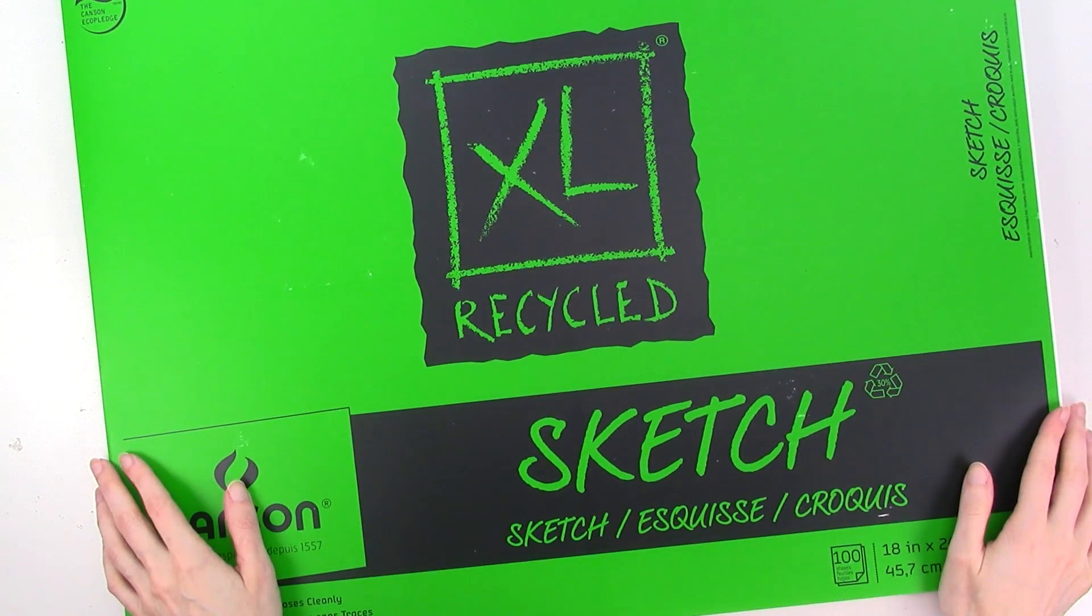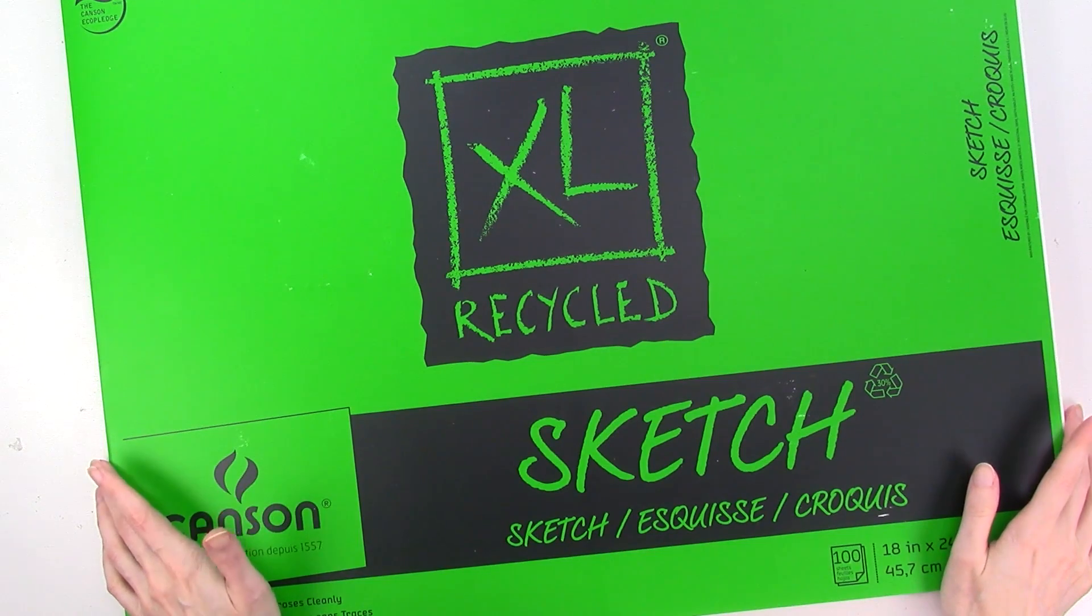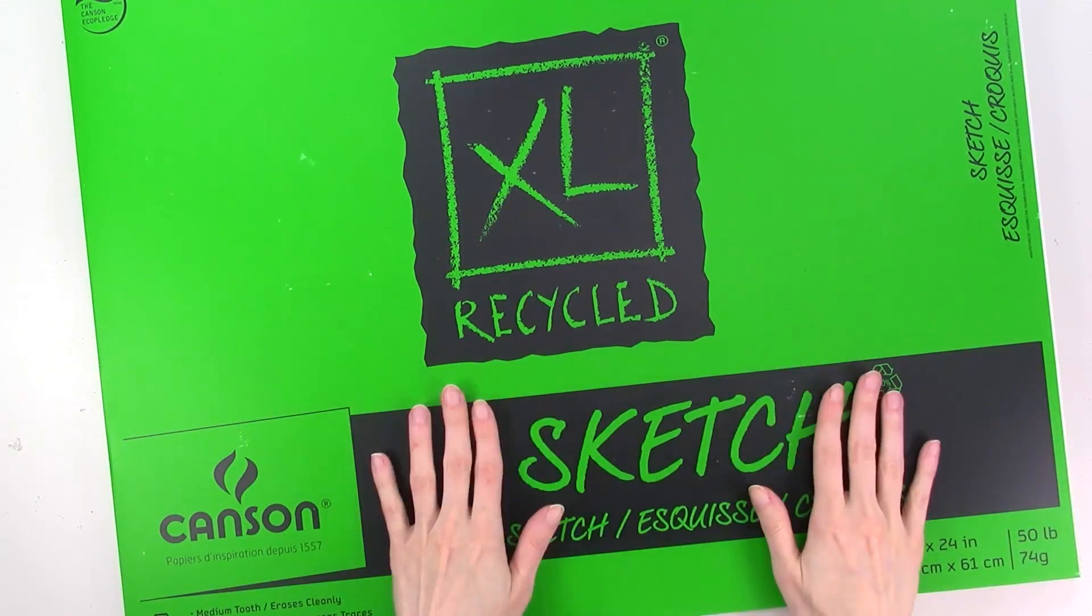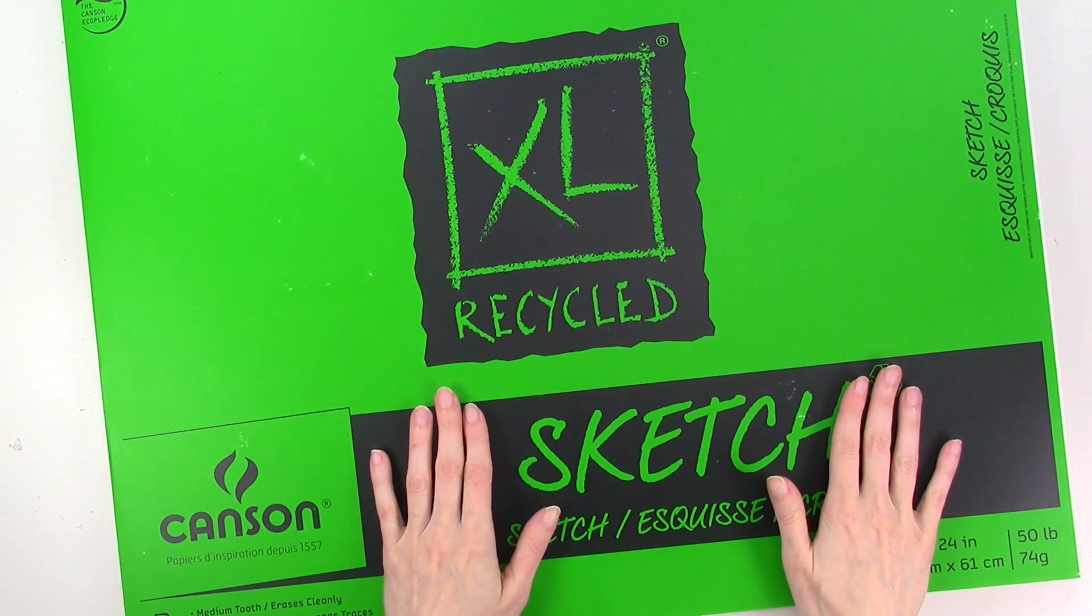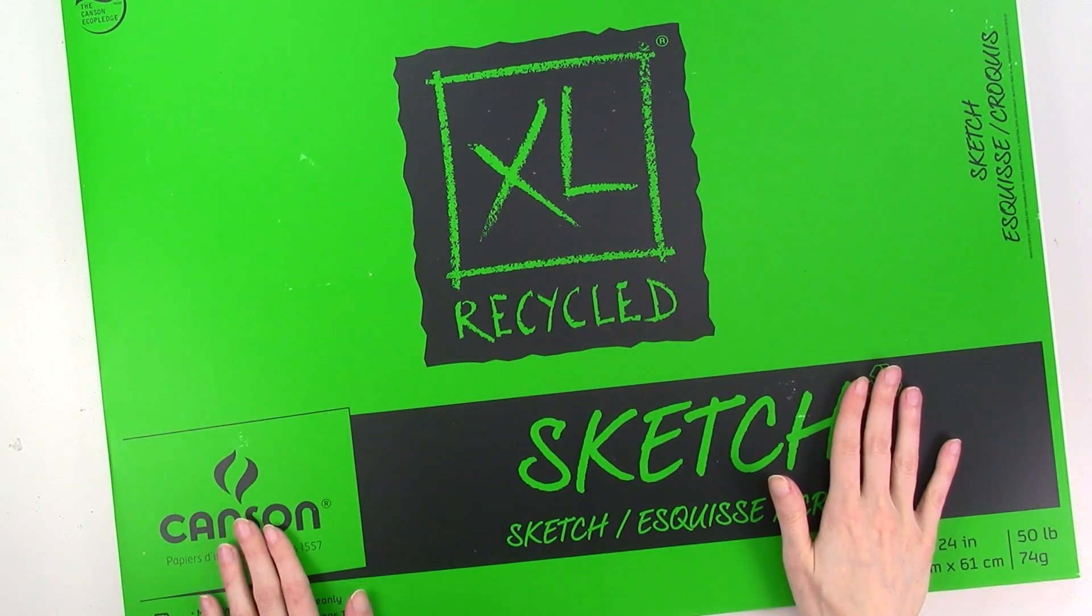To make your own gift wrap, you only need a few basic supplies. The paper that you'll use depends on what size gifts you'll be wrapping. I really like this 18x24 inch pad of sketch paper from Canson because the paper is large enough to wrap shirt boxes and medium sized gifts.